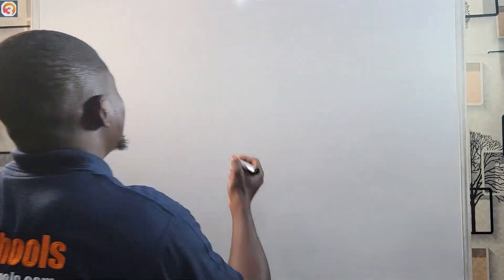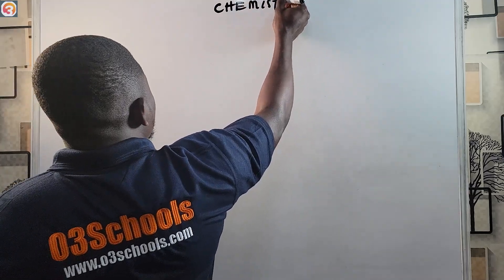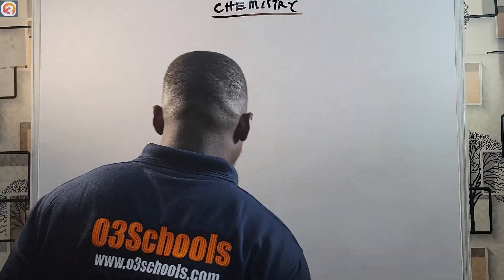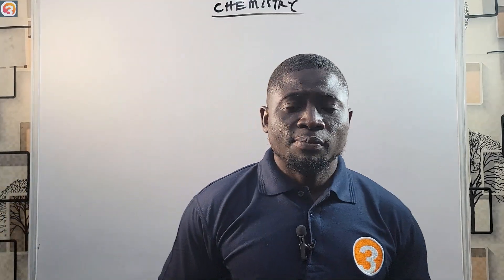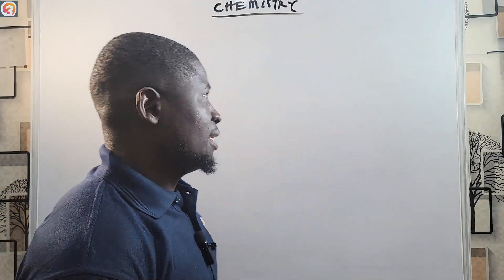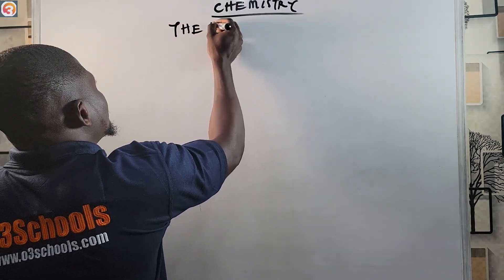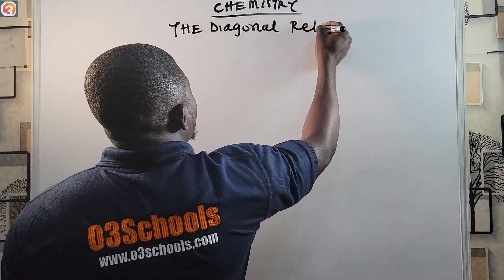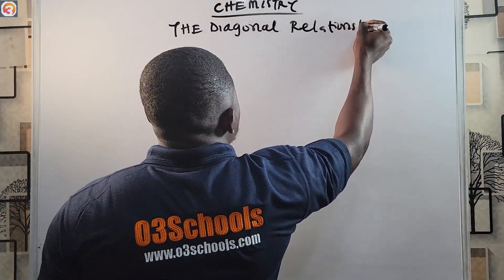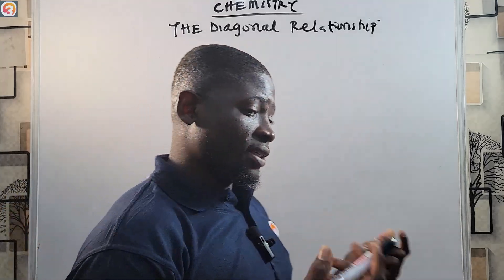Hello guys and welcome back to chemistry class — this is called Chemistry, another episode of Jump Chemistry. Today we're supposed to go to the fifth group, but before that we're going to be discussing the diagonal relationship. It is very, very important to understand this concept.